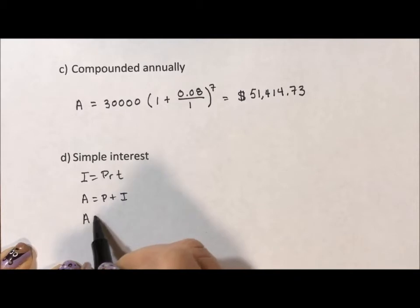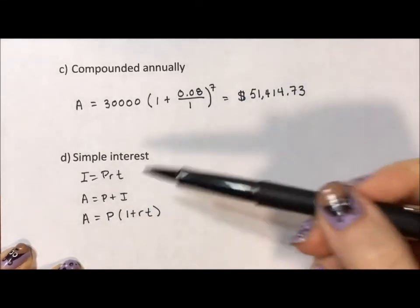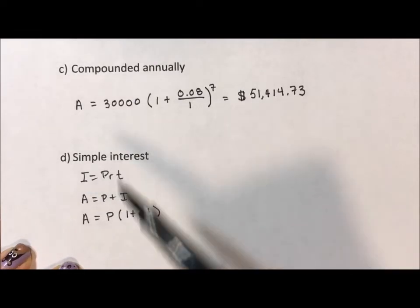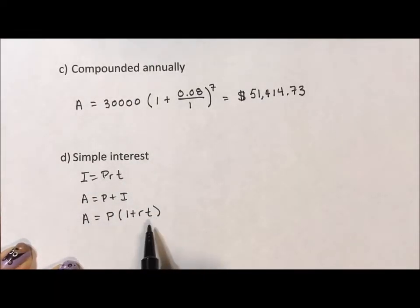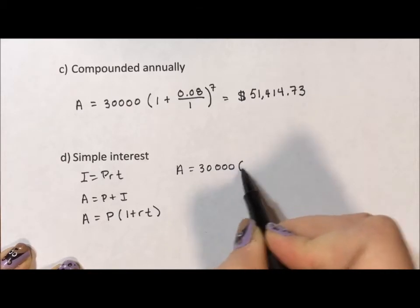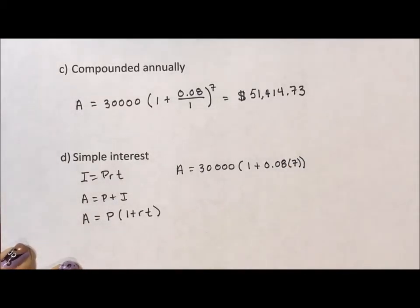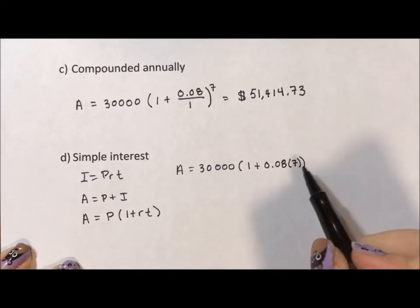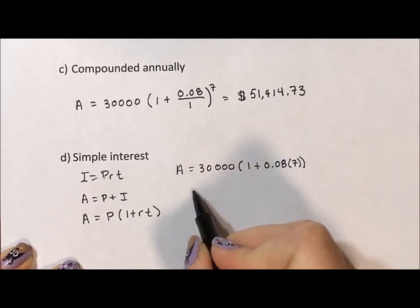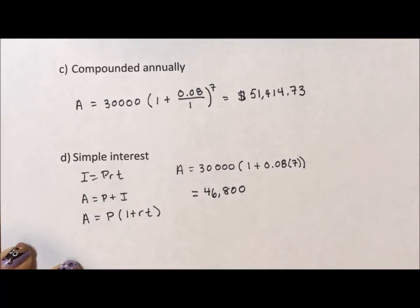Since interest is P times R times T, we can factor out the P and find that the total is principal times (1 plus rate times time). These are the three formulas shown at the top: the first is for interest, the second shows that principal plus interest equals total, and the third factors the P out so you can do it in one step. Using that last formula with $30,000 times (1 plus 0.08 times 7): notice there's no exponent — an exponent is how you grow exponentially. Here the interest is applied once and then multiplied by 7, so we get $46,800. After one year I've earned 8%, and that's the total interest applied every year — I don't earn interest on my interest.